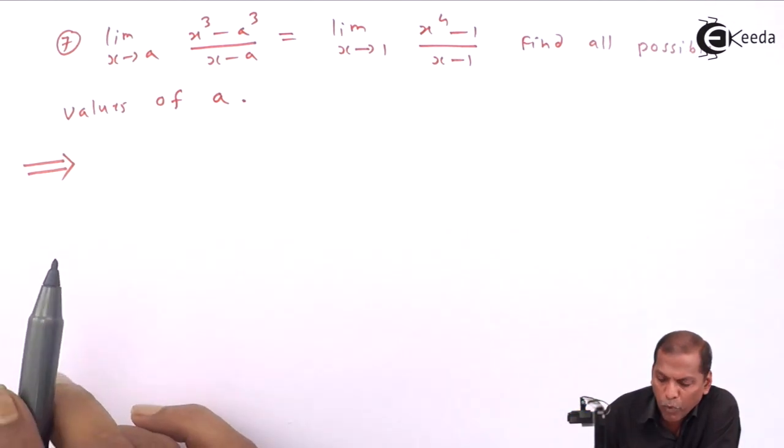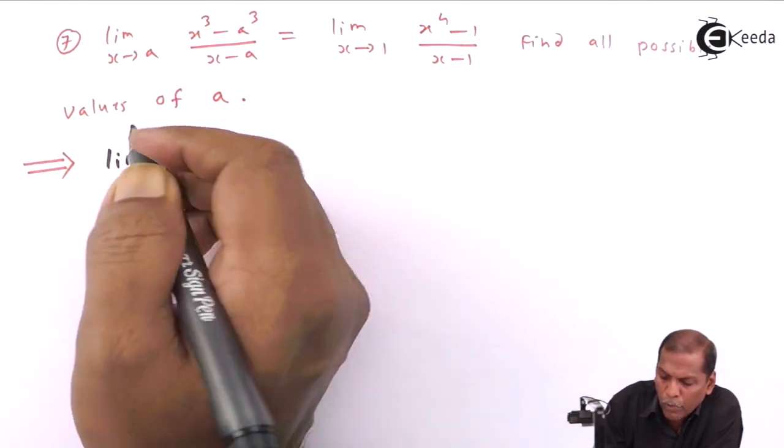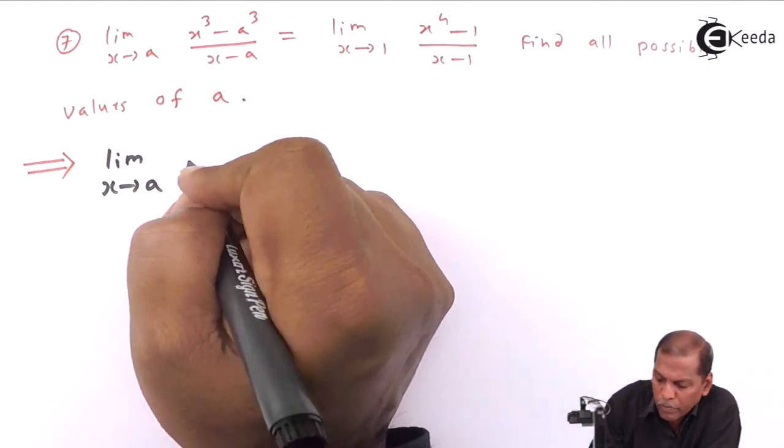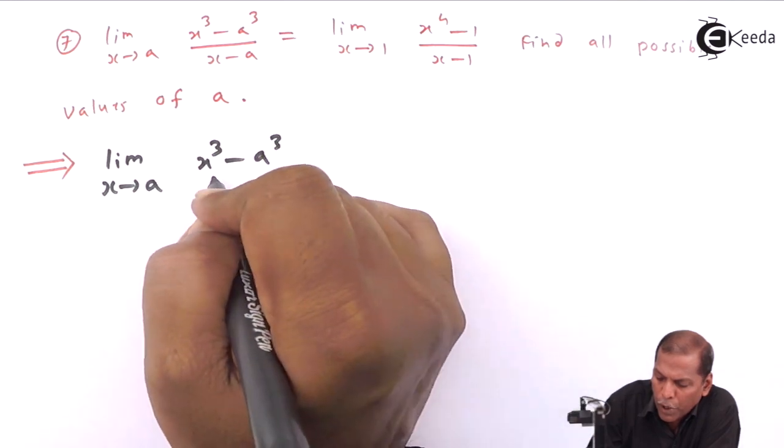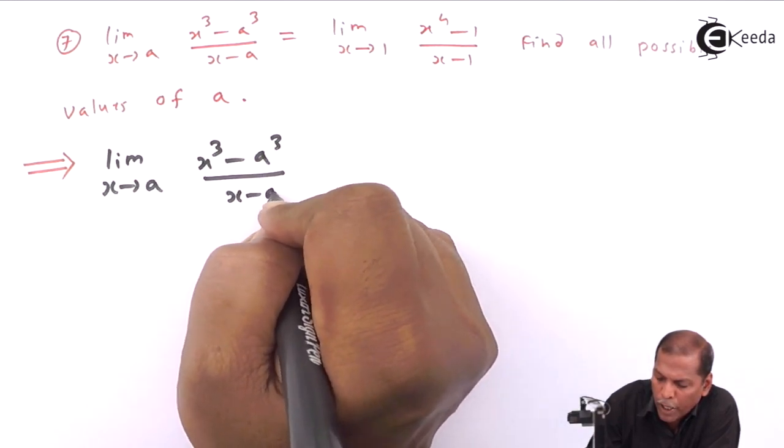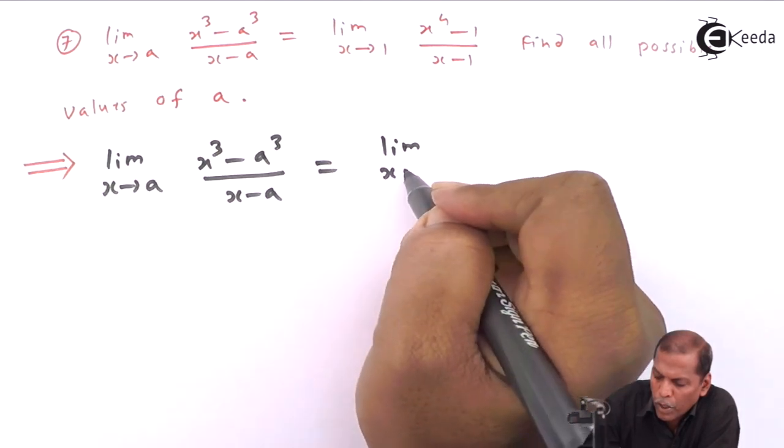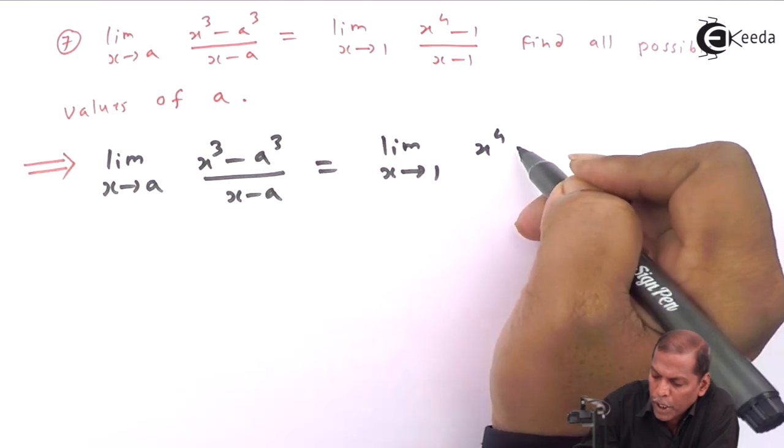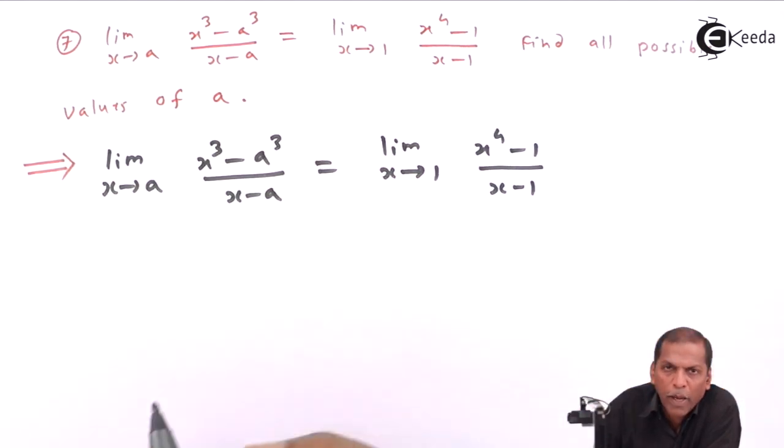Now let's see the solution. First of all, we write given that limit x tends to a of x cubed minus a cubed upon x minus a is equal to limit x tends to 1 of x to the power 4 minus 1 upon x minus 1.